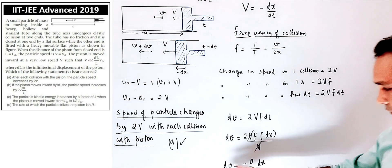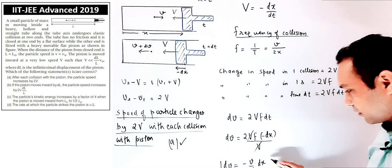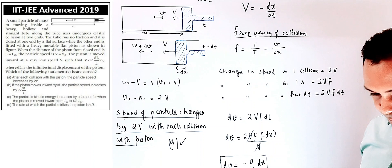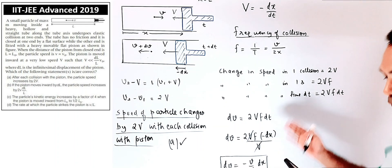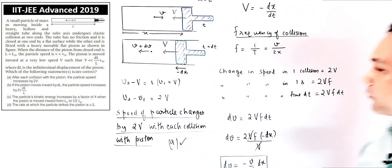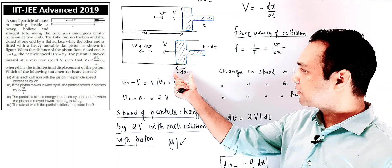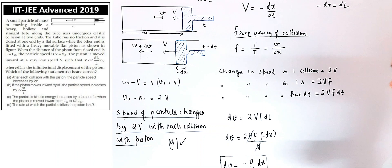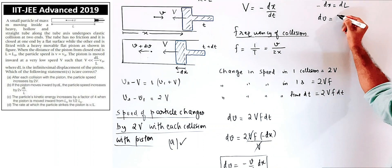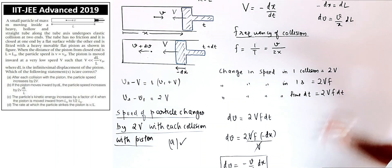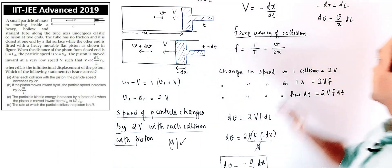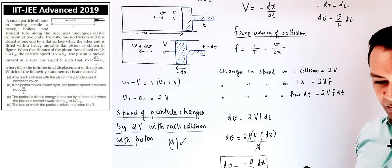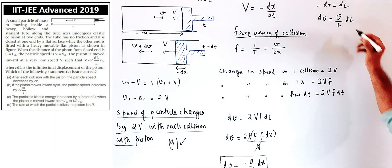Option B says that when the piston moves inward by dL, the speed change is 2V·dL/L. Using our relation where −dX = dL, we get dV = (v/X)·dL = (v/L)·dL. But Option B states dV = 2V·dL/L, which does not match our result. So Option B is incorrect.